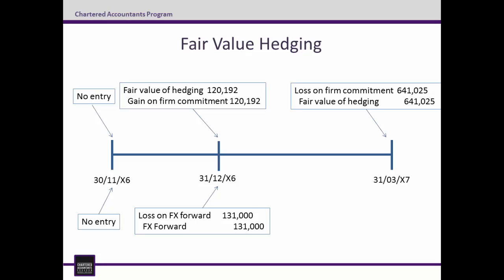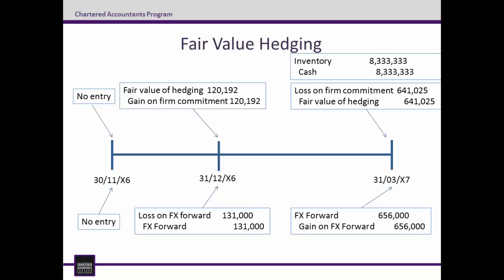The FX forward increases in value to $525,000. This represents an asset as the Euro that EasyBits will receive from Aurora as part of the FX forward are worth more than the Aussie EasyBits is required to pay. To adjust the FX forward from a credit balance of $131,000 to a debit balance of $525,000 requires a $656,000 debit to the FX forward account. Any change goes to profit or loss — in this case it's a gain on FX forward for $656,000. The inventory is then purchased for €5,000,000, which with an exchange rate of 0.6 means $8,333,333. Thus, debit inventory $8,333,333 and credit cash at bank $8,333,333.